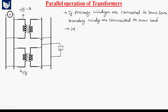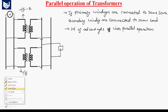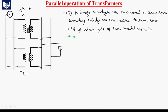There are a lot of advantages with the parallel operation of transformers. By operating the transformers in parallel, we can deliver reliable supply to the consumers and increase the efficiency of the system. Now we will look at the advantages of parallel operation.